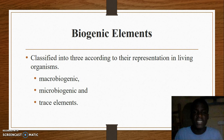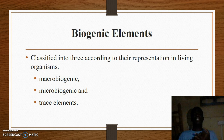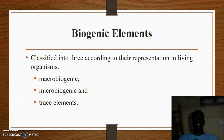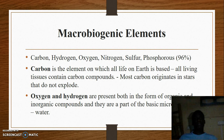Biogenic elements can be classified into three main classes: macrobiogenic elements, microbiogenic elements, and trace elements. Macrobiogenic elements are those found in large quantities — they make up the majority of human body weight. These include carbon, hydrogen, oxygen, nitrogen, phosphorus, and sulfur.